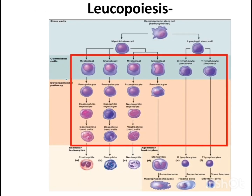Leukopoiesis refers to the formation of white blood cells. The hematopoietic stem cell, also known as hemocytoblast, leads to myeloid stem cell and lymphoid stem cell. The myeloid stem cell leads to myeloblast and monoblast. Myeloblast leads to promyelocyte, which differentiates into eosinophilic, basophilic, and neutrophilic myelocytes, each leading to their respective band cells and then mature granulocytes. Monoblast leads to pro-monocyte, then monocyte, and ultimately tissue macrophages.